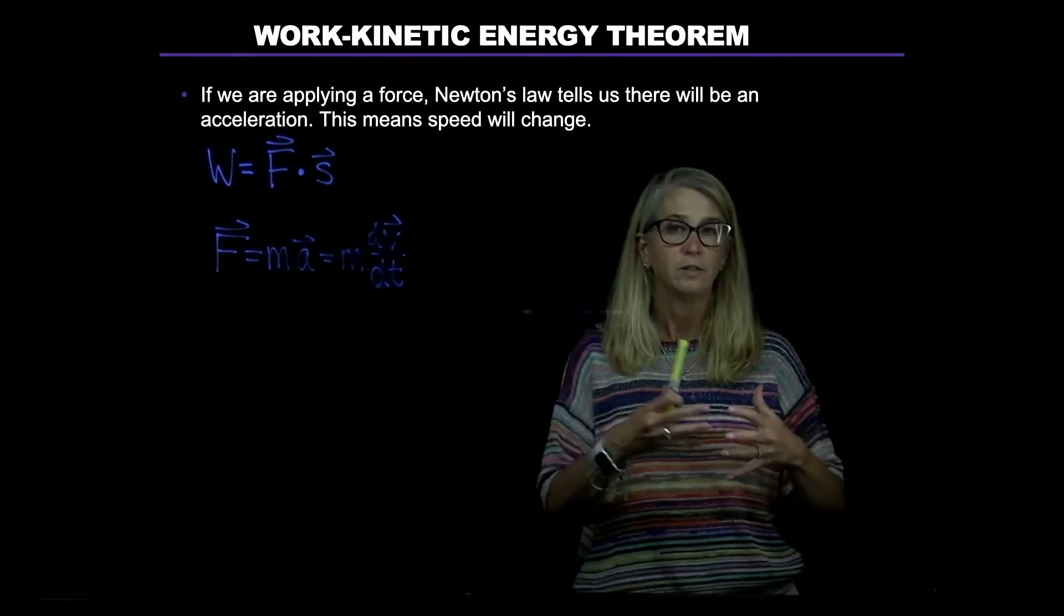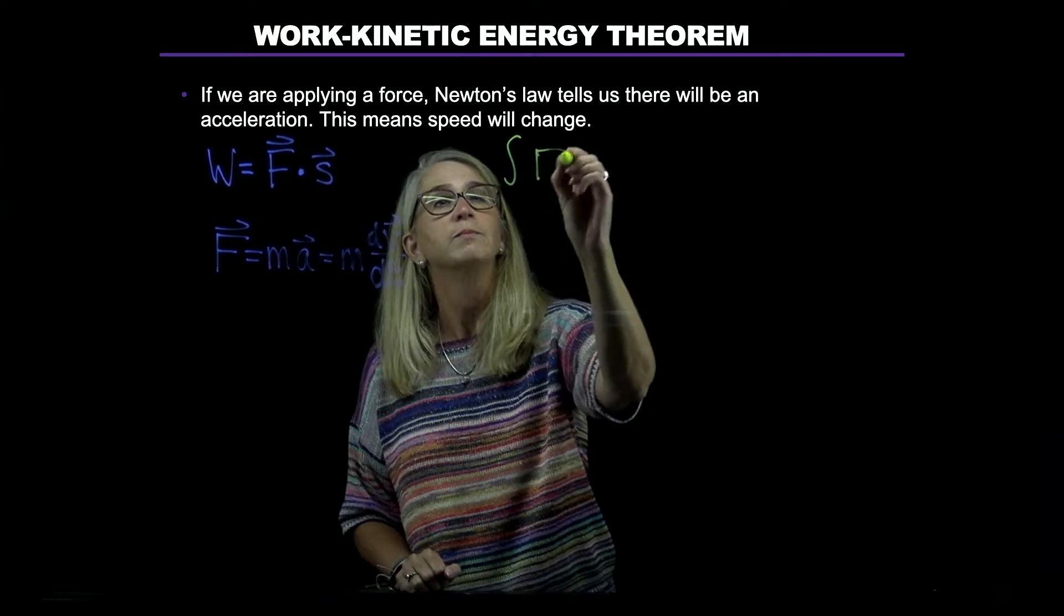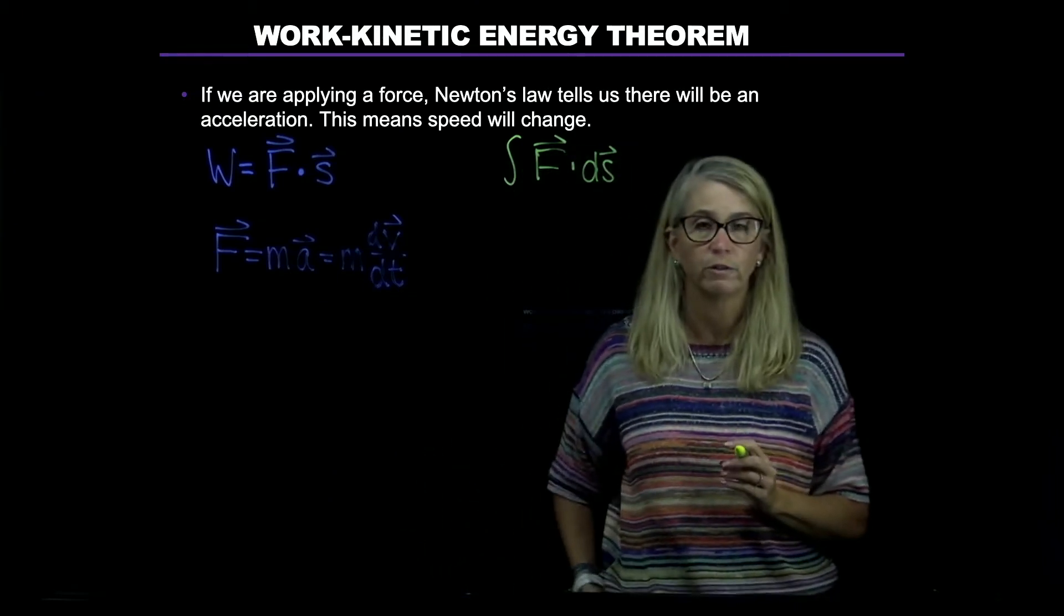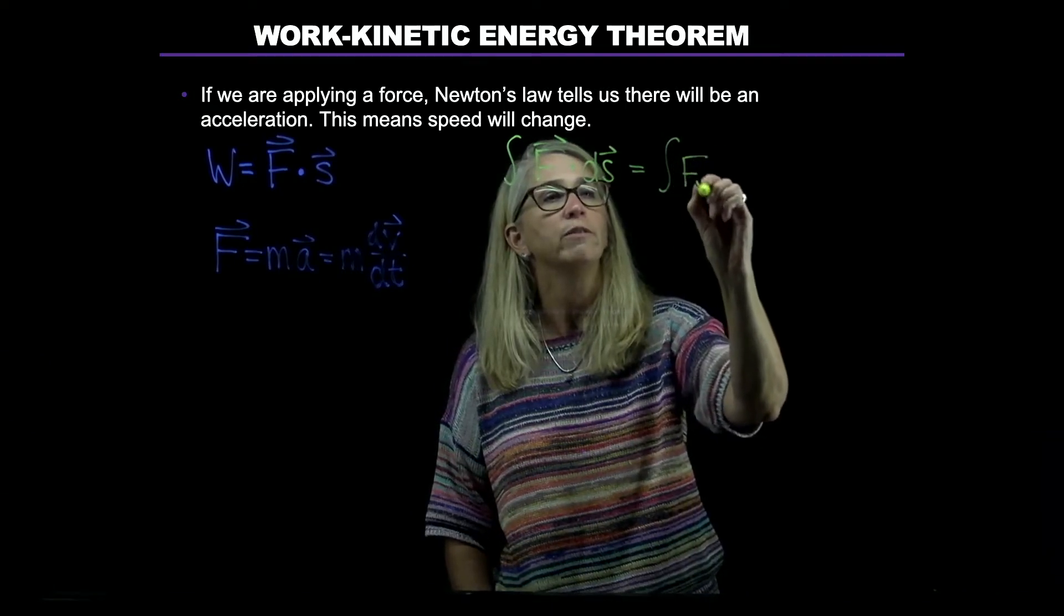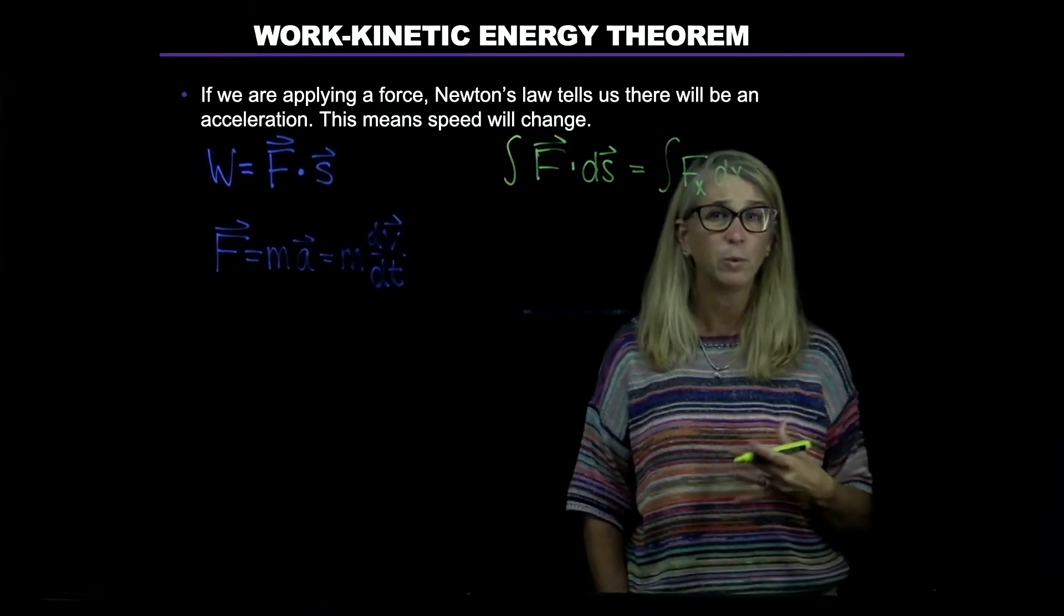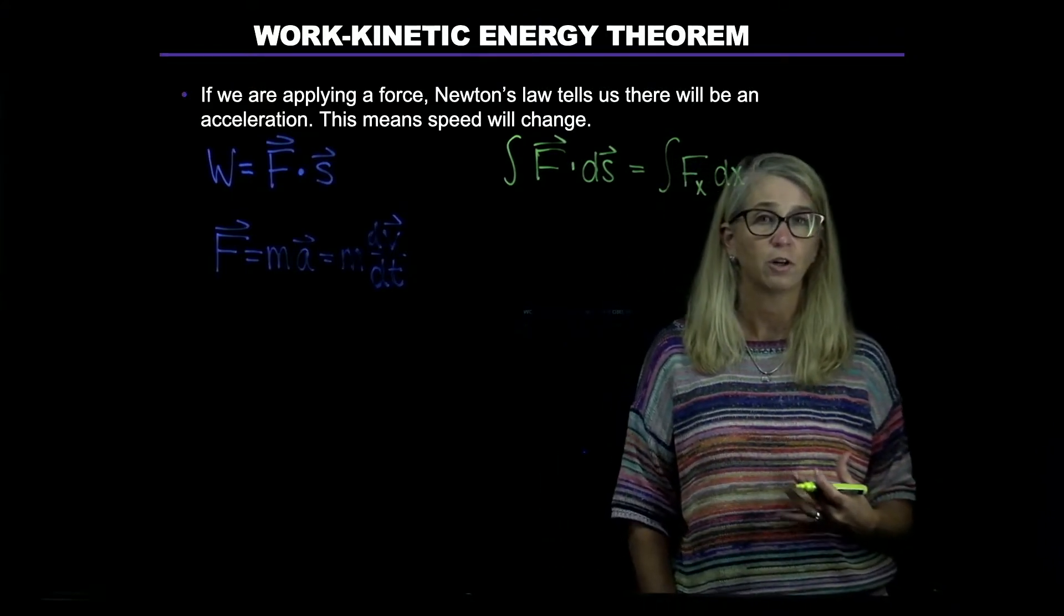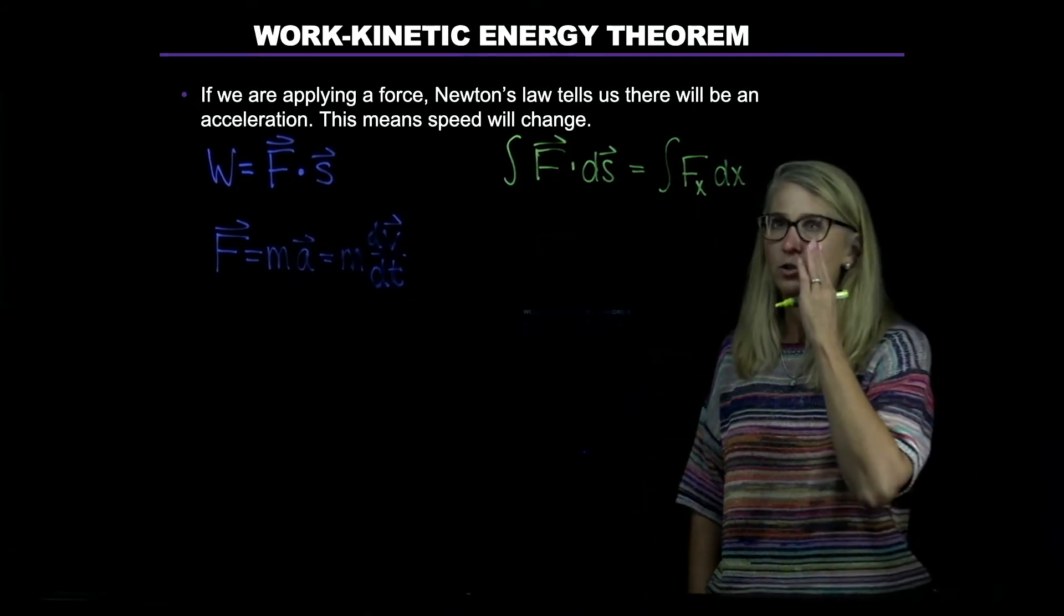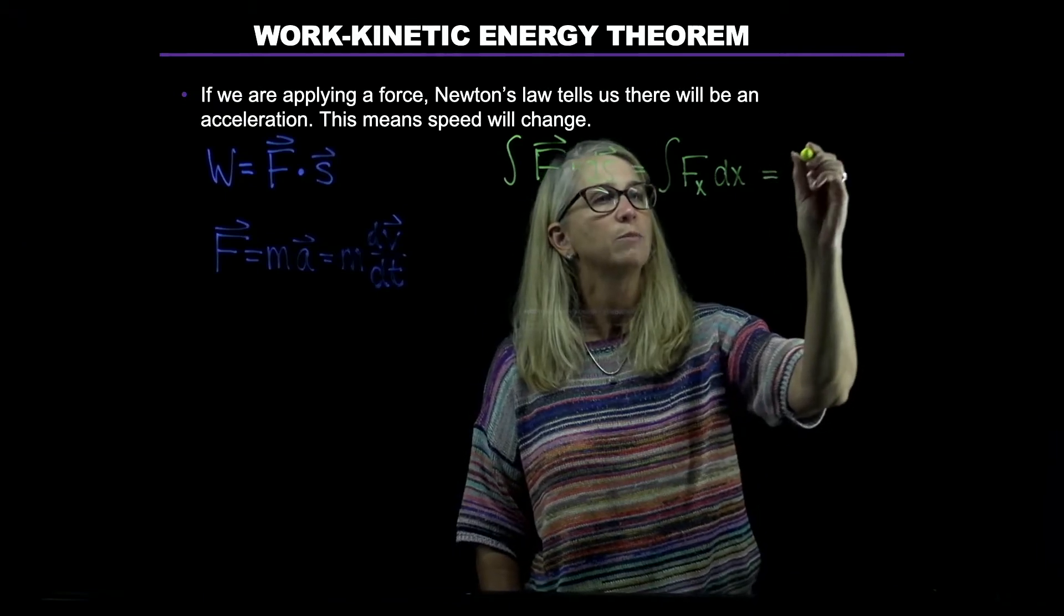In order to see what the end result is, we want to look at the integral form of work, where we take the integral of the force with the displacement. Like we saw in previous slides, it'll make it easier if we assume the force and displacement are in the x direction. It doesn't change our end result, but it'll make it easier for us. If we write it like this, we could replace the force with mass times acceleration.